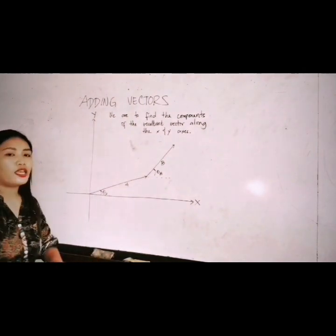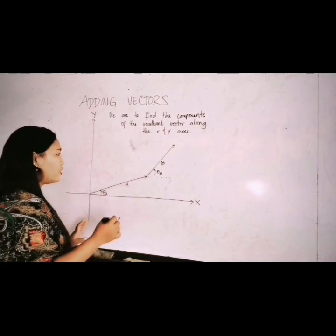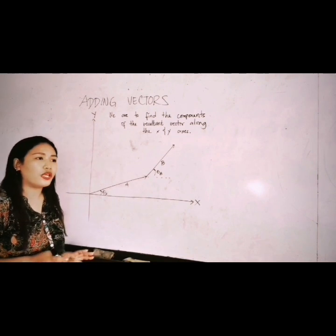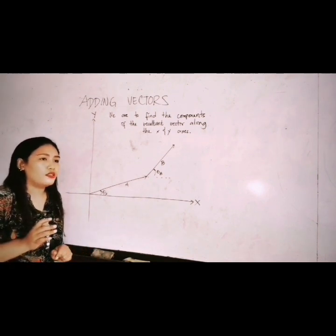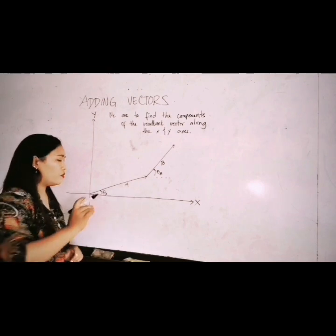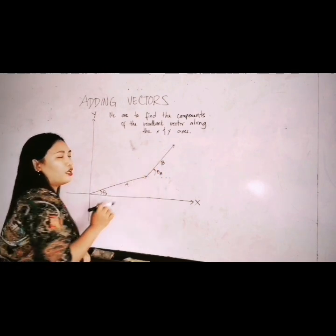The same as the problem. So first, we have to write the resultant vector. As you can remember, the resultant vector is the shortest distance from the starting point to the end point.